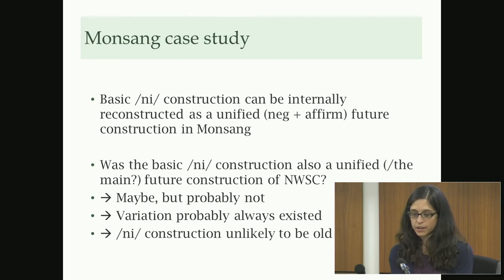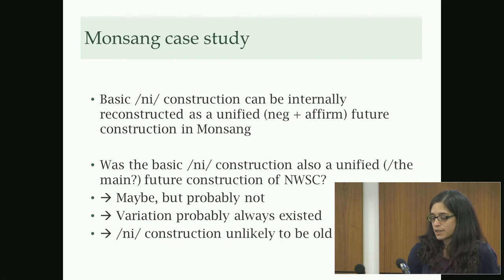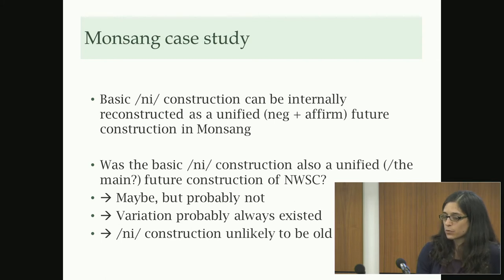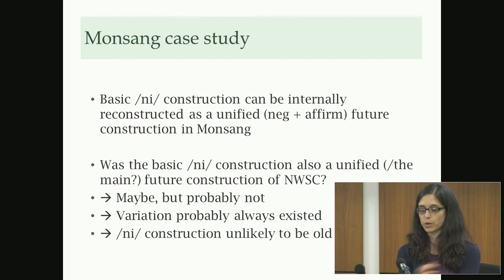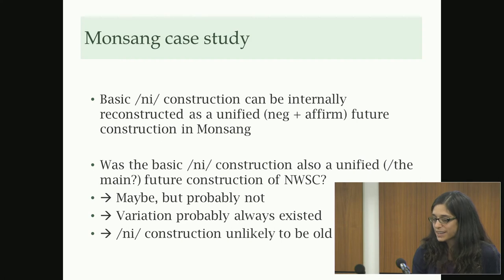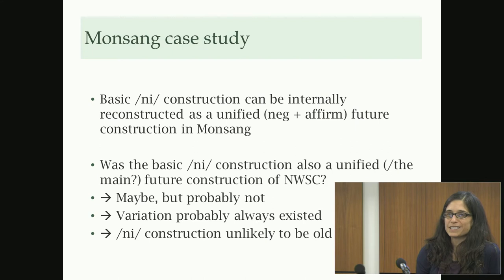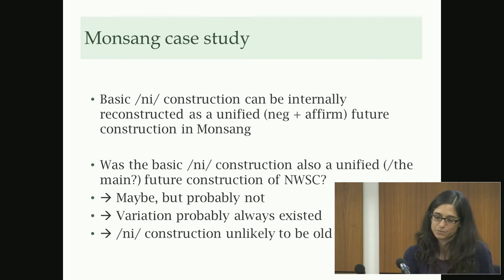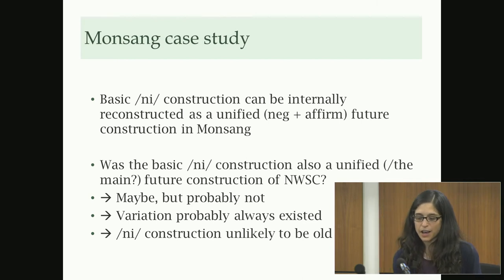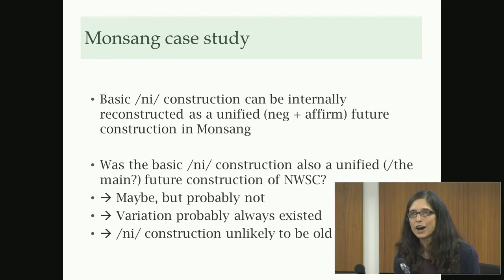In Monsang, based on internal reconstruction, it's really possible to make a case that the knee construction is the original basic future construction of the language, used both in affirmative and negative contexts — and now restricted to negative contexts because affirmative contexts have been innovative. The next question is whether we can extrapolate from Monsang to all Northwestern languages. That might make intuitive sense if we assume pre-modern Monsang is roughly the same time depth as Proto-Northwestern.